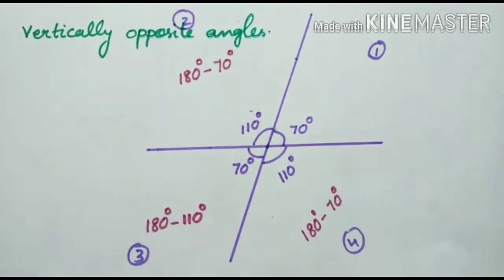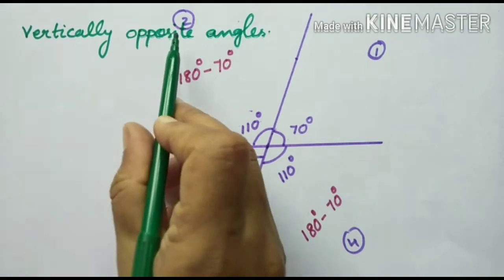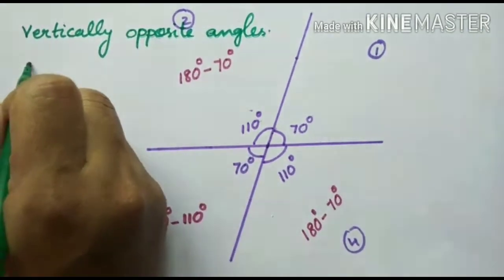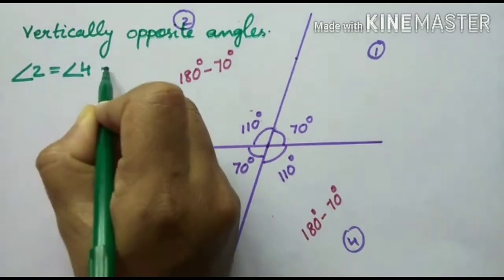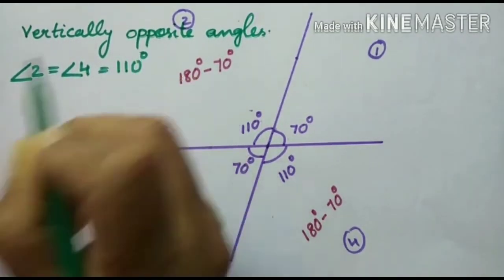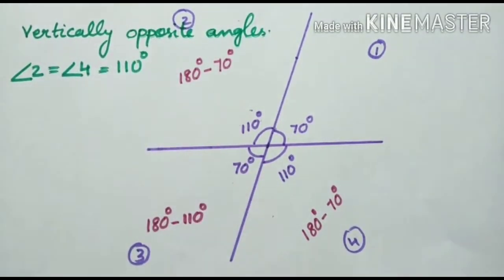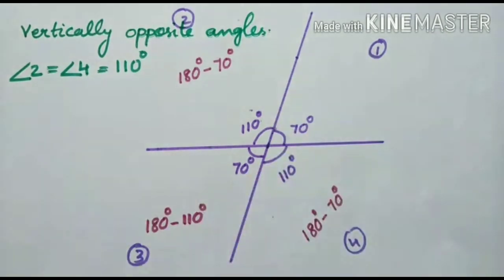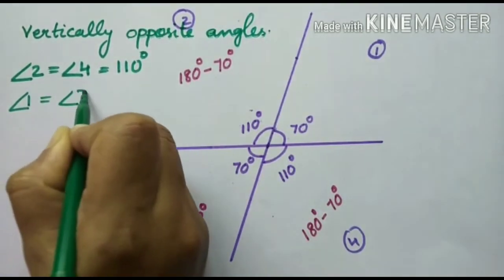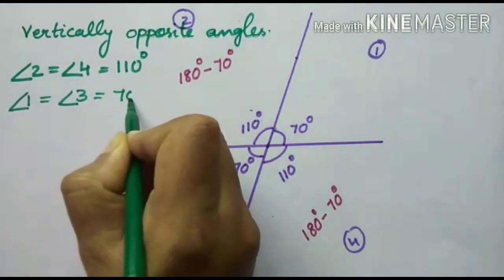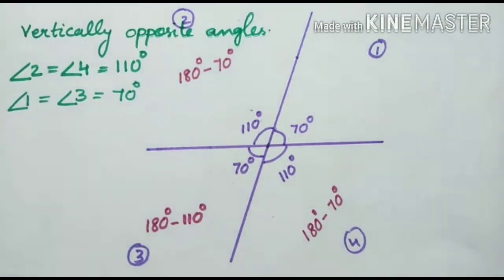Let us note down the vertically opposite angles. Which are the vertically opposite angles? Angle 2 and angle 4 — so we write angle 2 equals angle 4, that is 110 degrees. The next vertically opposite pair is angle 1 and angle 3 — so angle 1 equals angle 3, that is 70 degrees.